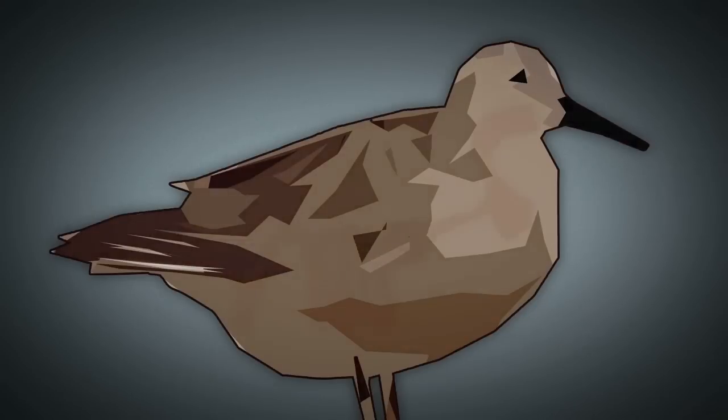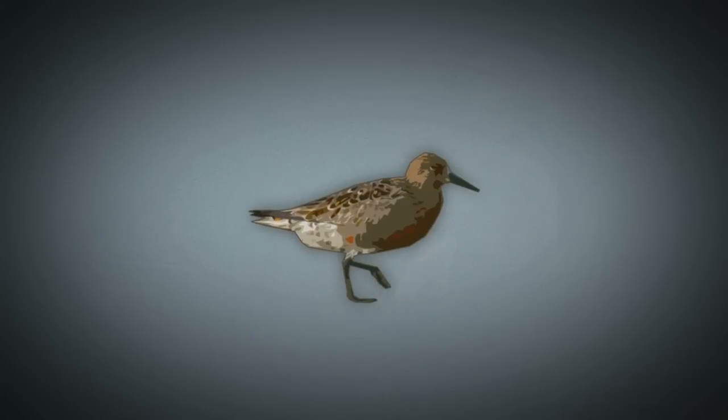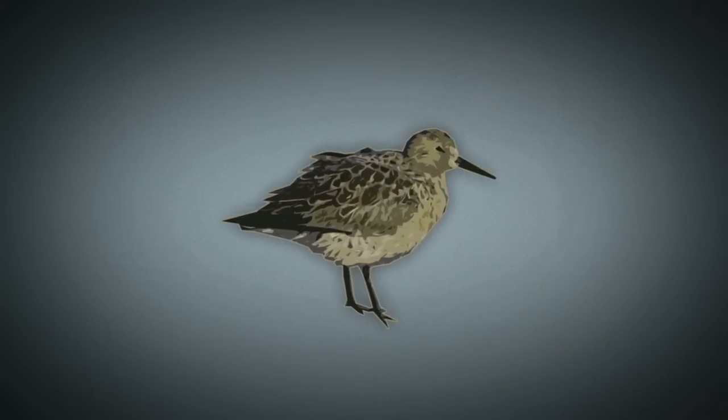The muscles related to the gizzard play an important role as they allow the Red Knot Rufa to crush the shells of the molluscs that are part of its diet. The bird becomes an eating machine.